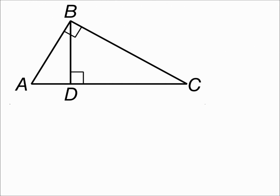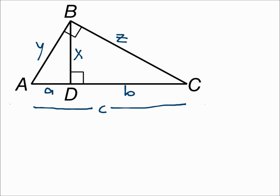To show that the triangles are similar, let's first label the segments. The altitude we'll call X, and the two legs will be Y and Z. For the hypotenuse, the piece on the left is A, the piece on the right is B, and the whole hypotenuse will be C.